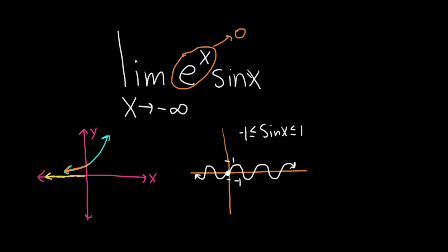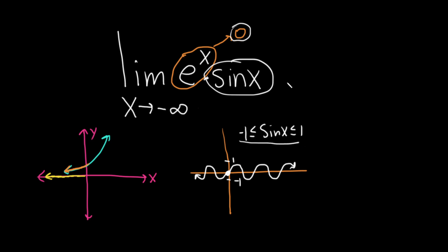So if e to the x is approaching zero and sine is oscillating between negative one and one, eventually what's going to happen is you have something getting smaller and smaller being multiplied by something that's just bouncing back and forth between those two numbers. So this product itself is approaching zero, and this limit should be equal to zero. The question is how do we prove it?